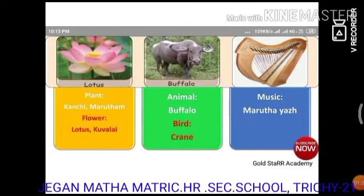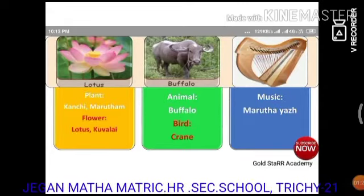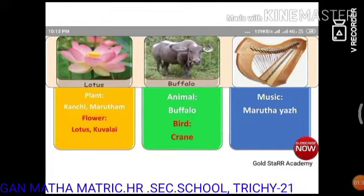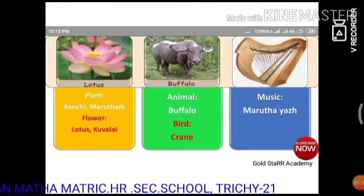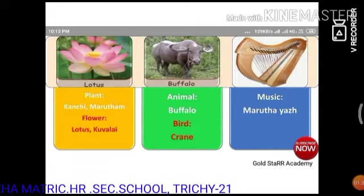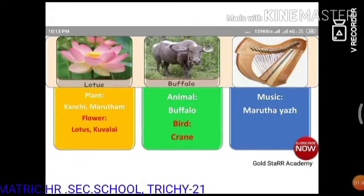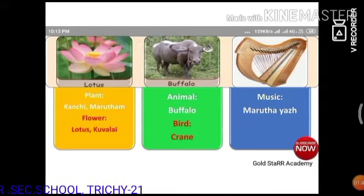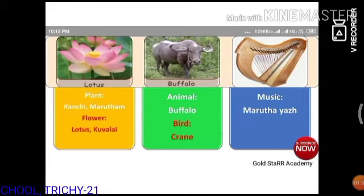For the Marudam land: God — Indiran; people — Ulavar and Ulathiyan; occupation — farming; plant and flower — Congee, Marudam, Lotus, and Kuvalai; animal and bird — buffalo and crane; musical instrument — Marudayal.